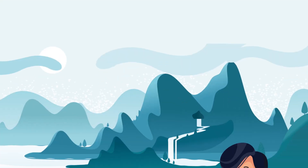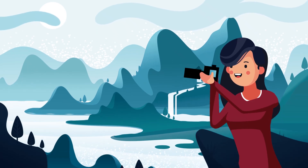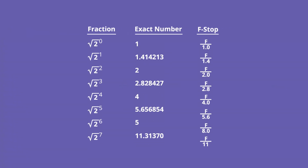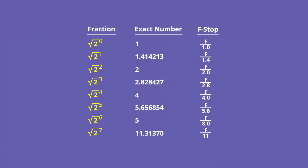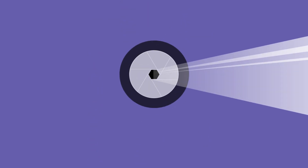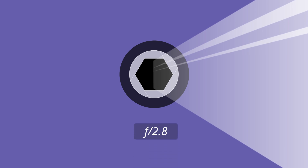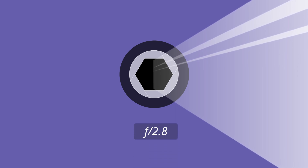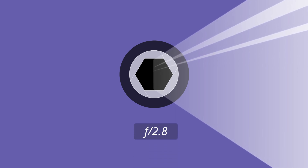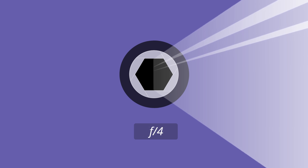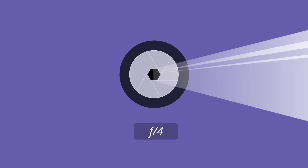As you experiment with different apertures, you'll notice that the f-stop value does not increase in a linear fashion. This is because f-stop values increase or decrease geometrically, in powers of the square root of two. What this means is that every time you decrease your f-stop by one stop, the area of the aperture hole doubles, letting in twice the amount of light. Increasing your f-stop by one stop reduces the amount of light entering your camera in half.